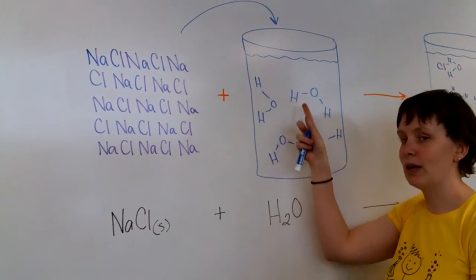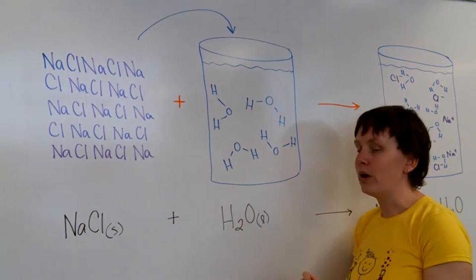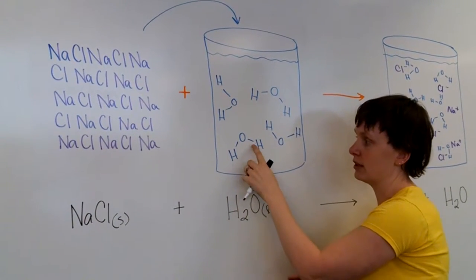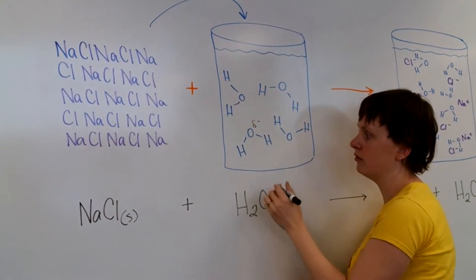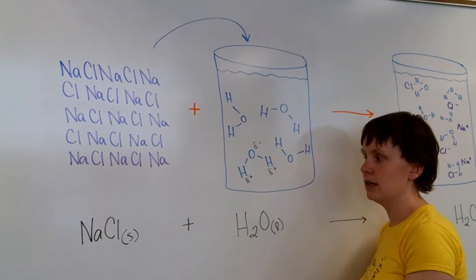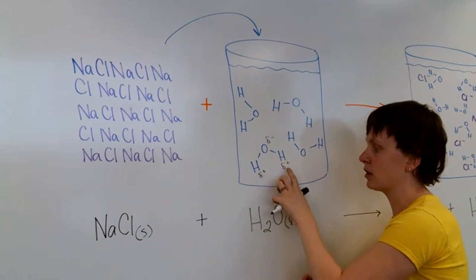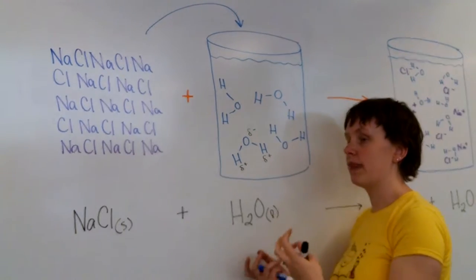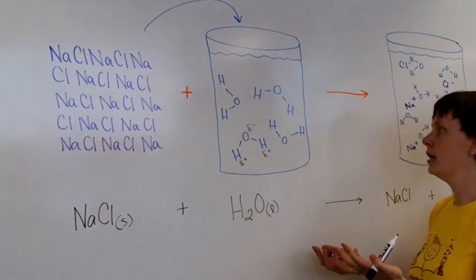Now if we add this to a beaker of water, I've got all of our little bent water molecules floating around, and we know water is a liquid. We learned in chapter 8 that water is a polar molecule. So all of these oxygens are winning the tug of war on those electrons they're sharing with hydrogen, so that makes them partially negative. We use our little Greek letter delta negative versus delta positive for those hydrogens.